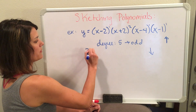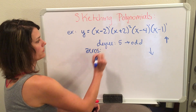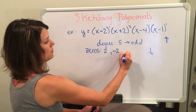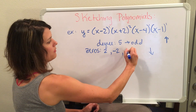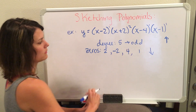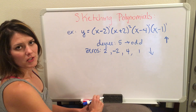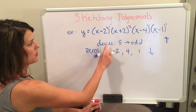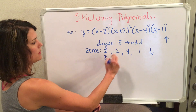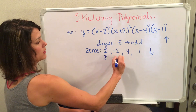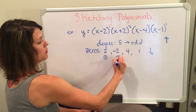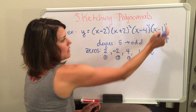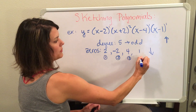Next I'm going to find my zeros. I have a zero at 2, negative 2, 4, and 1. After finding my zeros, I check my multiplicity. At 2, I have a multiplicity of 1. Negative 2 has a multiplicity of 2. 4 has a multiplicity of 1. And 1 has a multiplicity of 1.